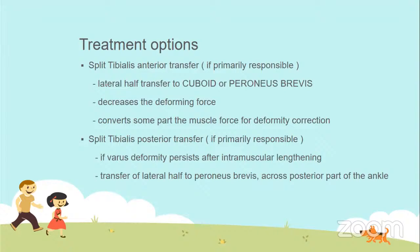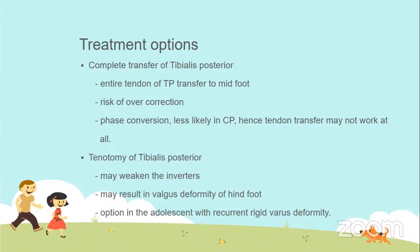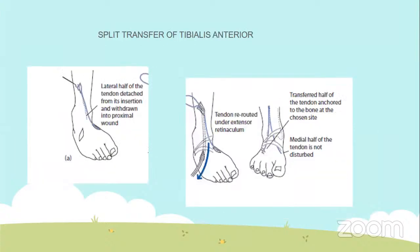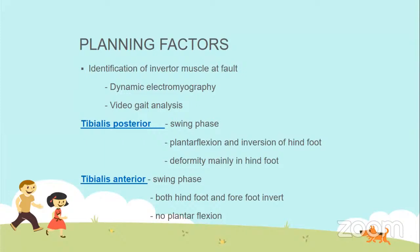Surgical options for varus deformity include: split tibialis anterior transfer — the tibialis anterior is split and the lateral part is transferred to the cuboid or peroneus brevis; split tibialis posterior transfer — the lateral part of tibialis posterior is transferred to peroneus brevis across the posterior part of the ankle joint. Complete transfer of tibialis posterior and tenotomy of tibialis posterior are other options. Planning factors include identification of the inverter muscle at fault using dynamic electromyography or video gait analysis.